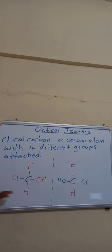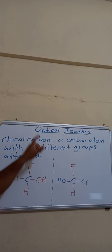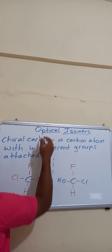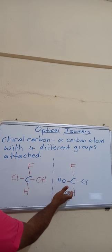Remember, another name for optical isomers is enantiomers. So these two are enantiomers. They are optical isomers because they have a chiral carbon, and the mirror images are non-superimposable.